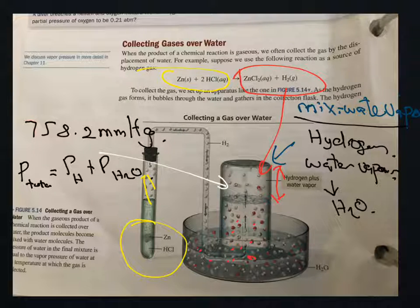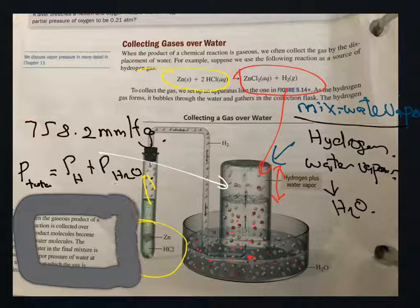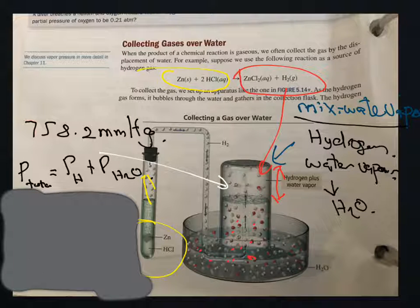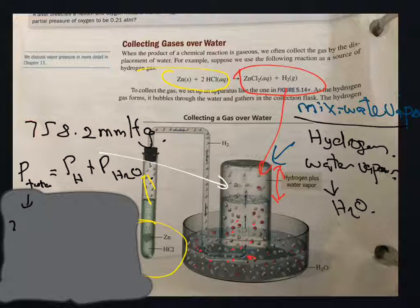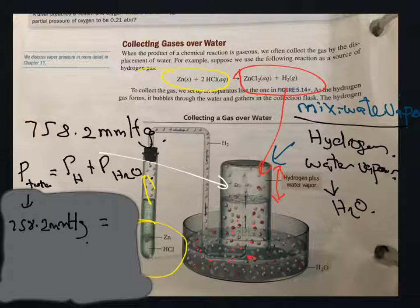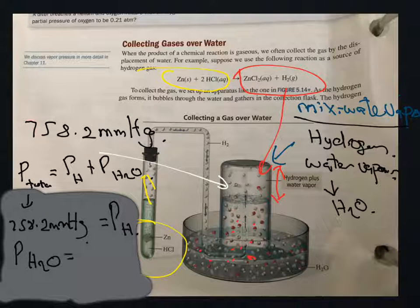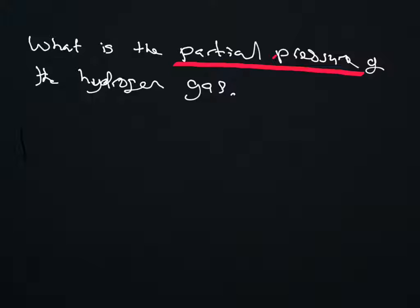So, using that equation, let's say we know that the total pressure is 758.2 mmHg. We want to find the pressure of hydrogen. We don't know what the pressure of hydrogen is — that's what we want to find. But let's say we know what the pressure of H2O is. How do we find the partial pressure of water?